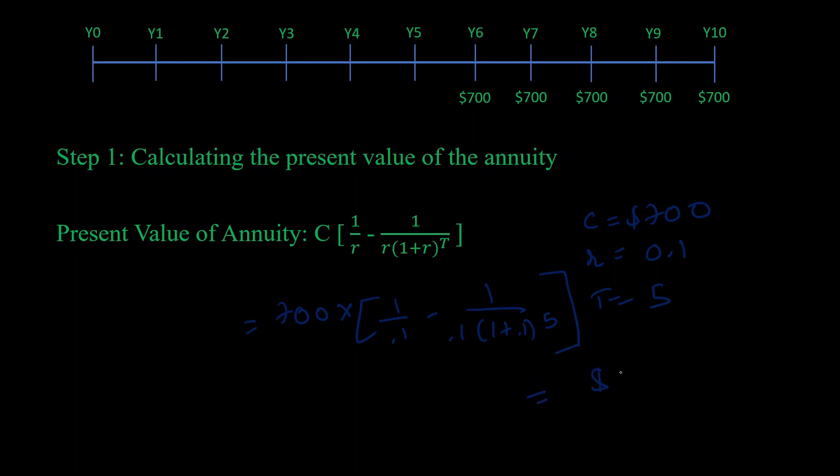The important thing to keep in mind is that this present value is the value at year 5, not year 6. This present value of annuity formula always gives you the present value one year before your first payment. Always keep that in mind—the C is the payment you get in year 1, not the present.